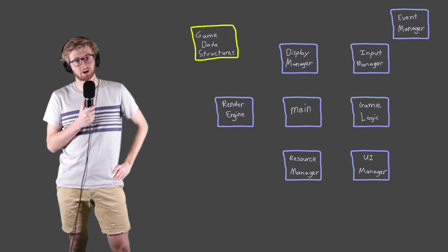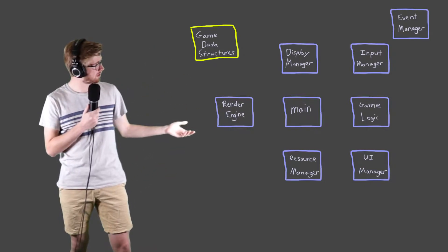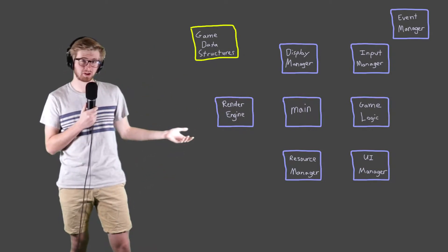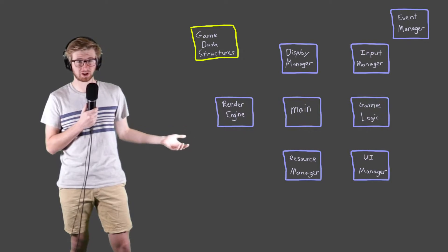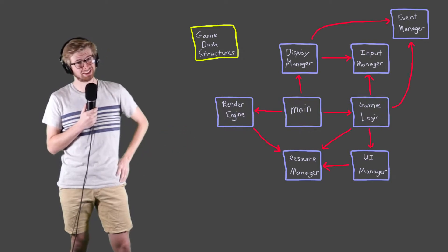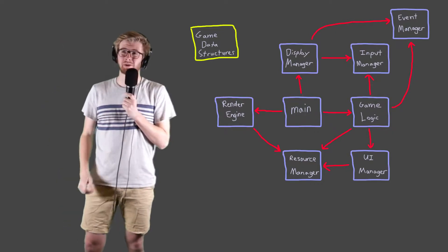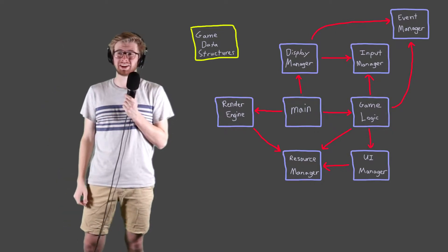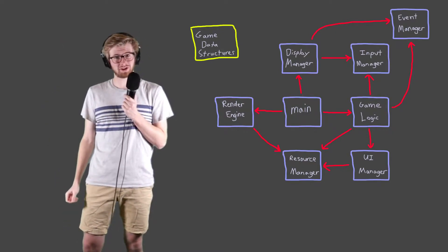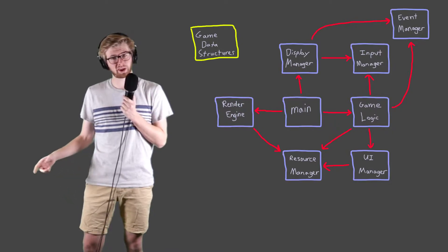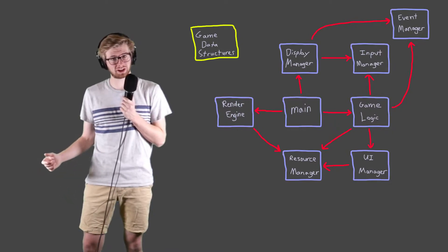So here we are on the diagram of my code. Here are all of the components, and while they look separated right now, if I show the connections between them, things get a little scary. The problem is that basically every single one of these components is connected to something that it shouldn't be connected to.